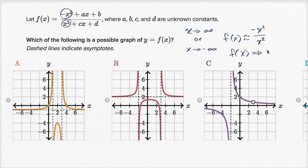So f of x is going to approach negative one in either direction as x approaches infinity or x approaches negative infinity. We have a horizontal asymptote at y equals negative one.